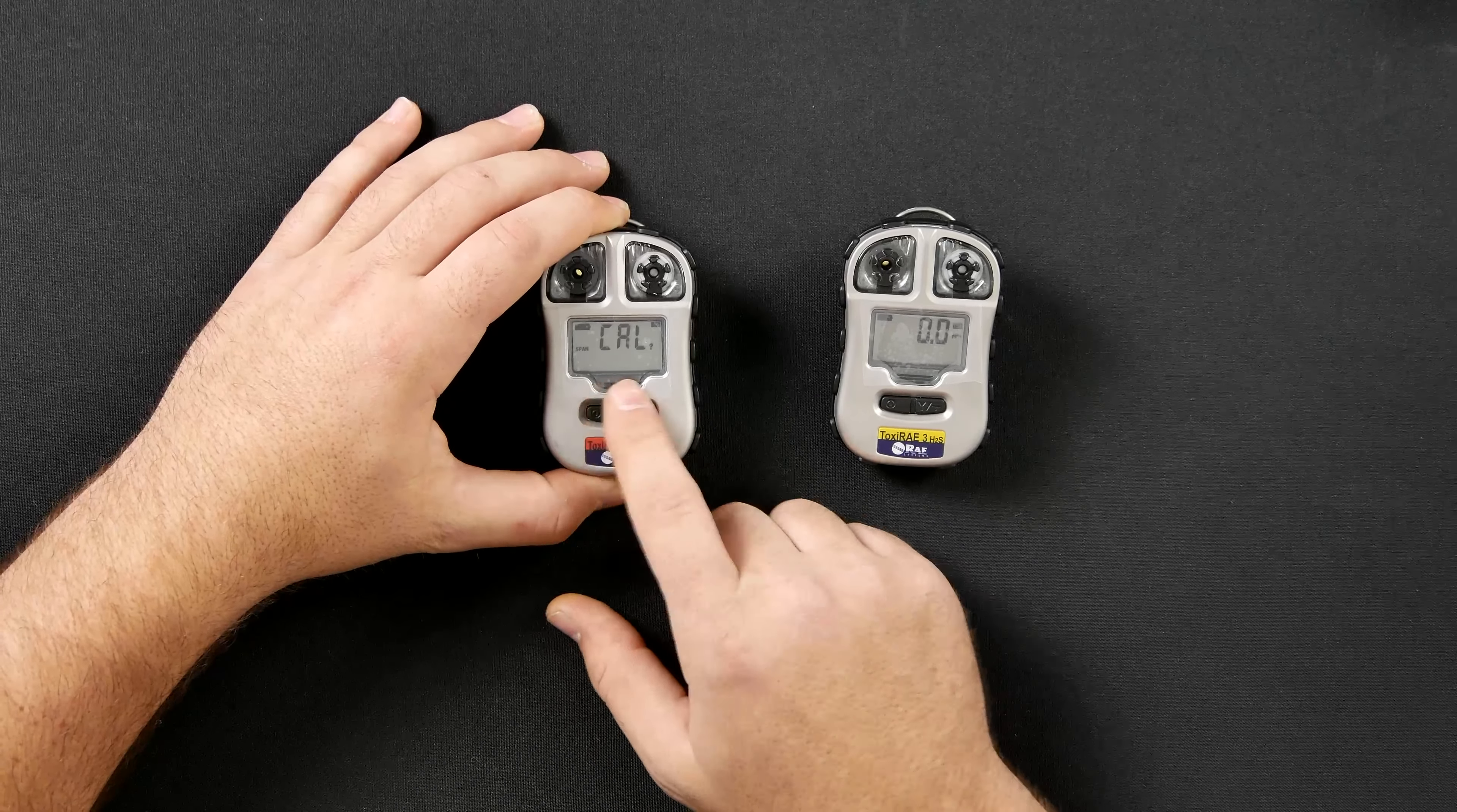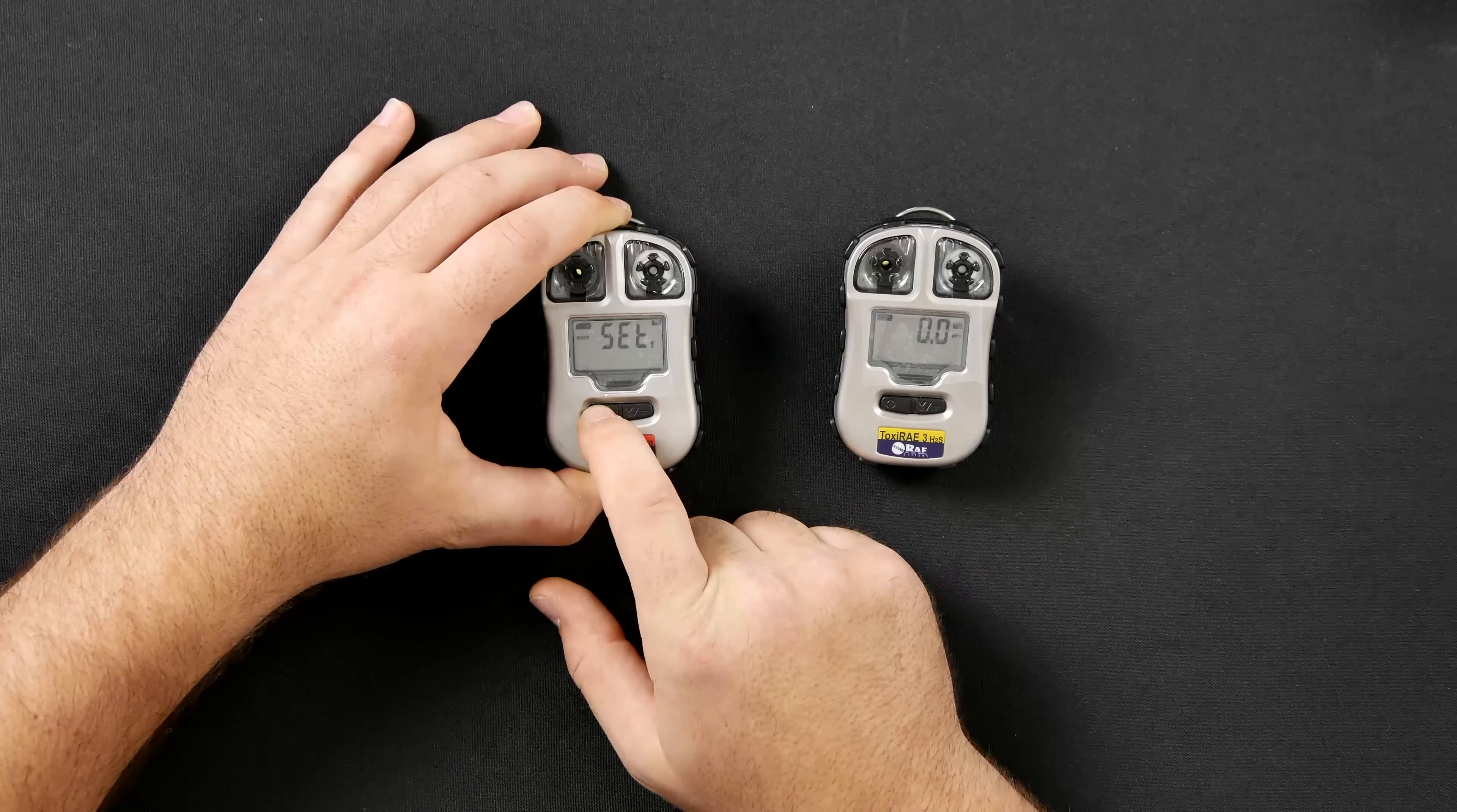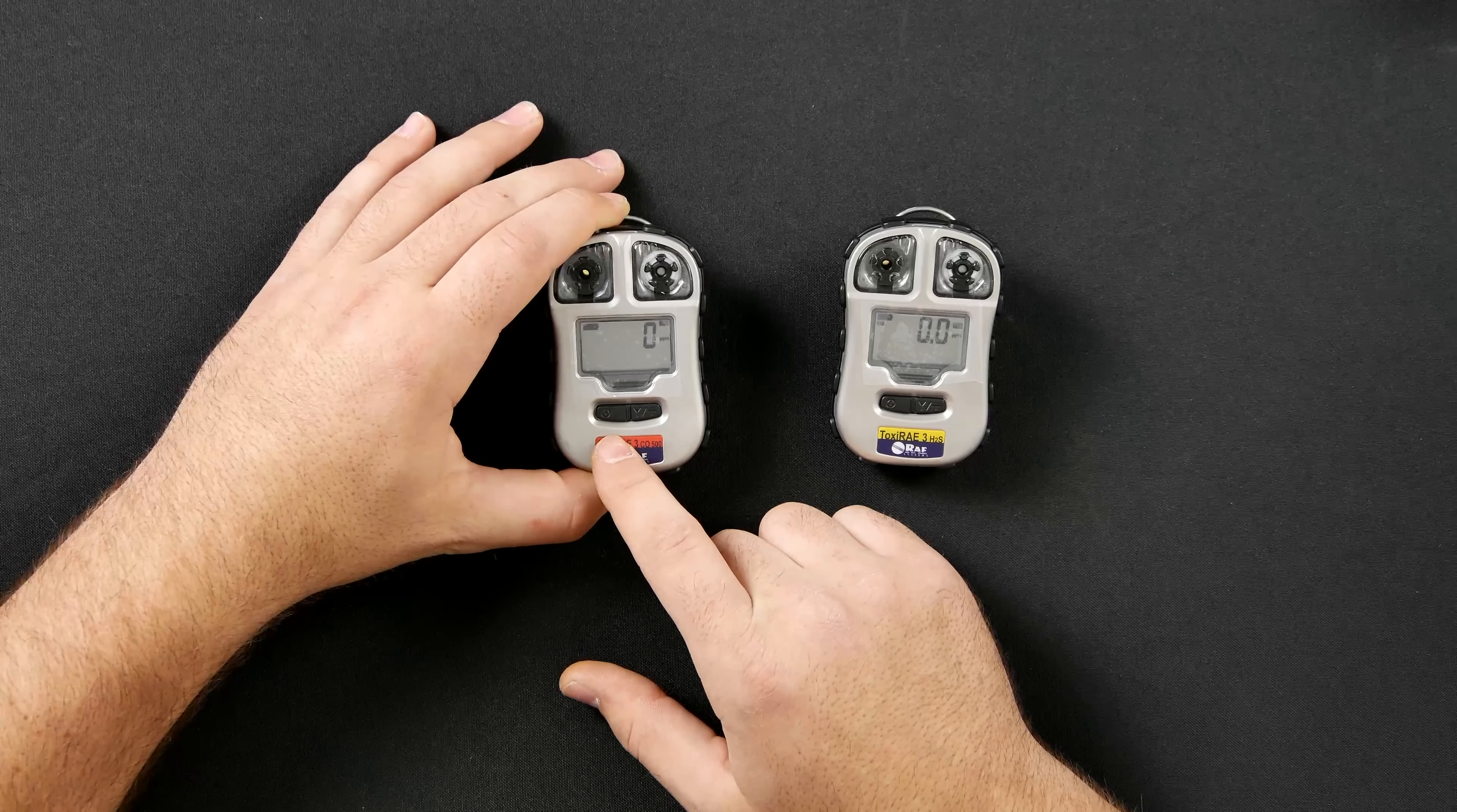You will then come to a SPAN calibration. If you may not want to proceed to the SPAN calibration, you may hit the mode button and exit out of the diagnostic mode. That is how you properly do a fresh air calibration on a Toxiray 3 CO.